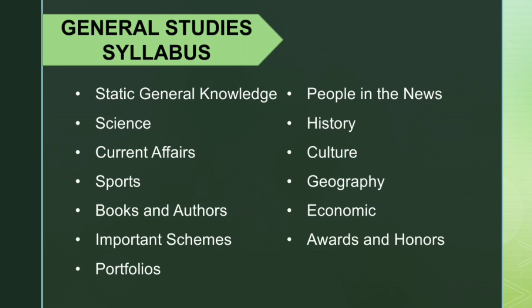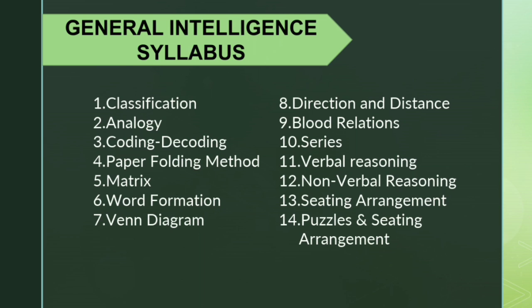Looking at the syllabus — for general studies: social science, current affairs, and general news. For reasoning: direction, blood relation, analogy, coding decoding, seating arrangements, number series, and picture-oriented reasoning. For the core syllabus, you can refer to the department paper.